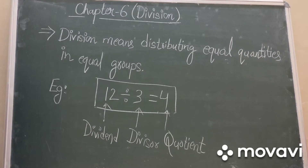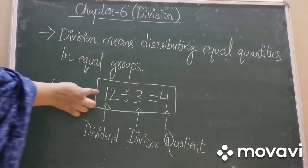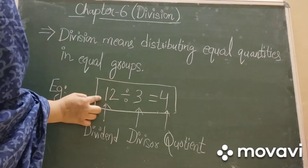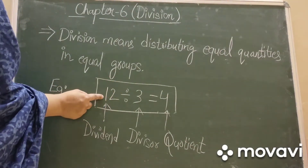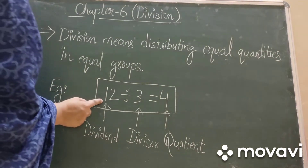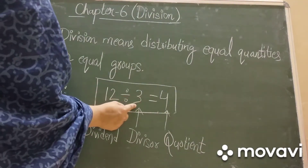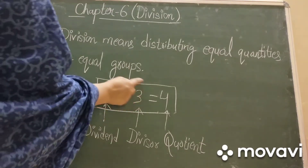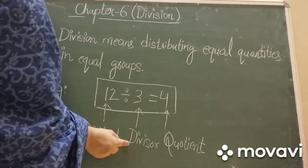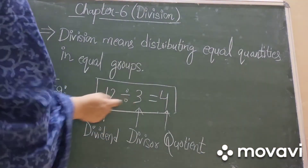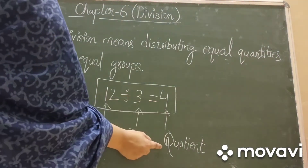Each part involved in division has a special name. Here we want to divide 12, so the number to be divided is known as dividend. And kiste divide kuna chahate hai 12 ko? 3 se. So the number by which we want to divide is known as divisor.